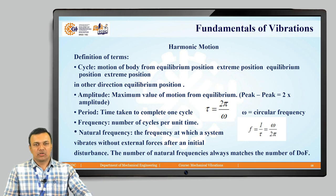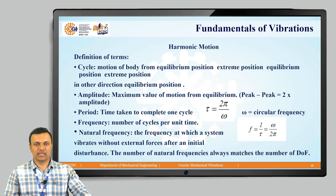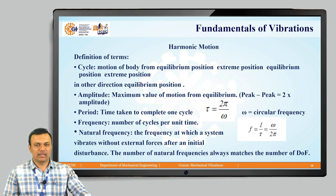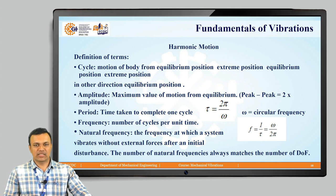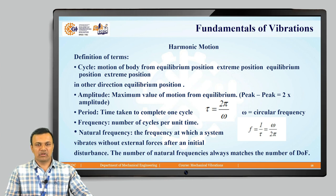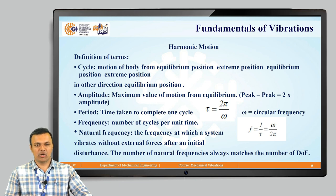There are different terms used for vibration analysis. A cycle is the motion of a body from the equilibrium position towards both extreme positions. Amplitude is the maximum value of motion from the equilibrium position; peak to peak is 2 times the amplitude. The period is the time taken to complete one cycle: tau equals 2 pi by omega. Frequency is the number of cycles per unit time: f equals 1 upon tau, which equals omega upon 2 pi. The natural frequency is the frequency at which a system vibrates without external forces after an initial disturbance.